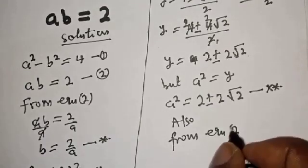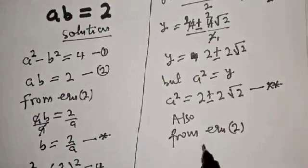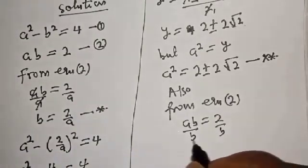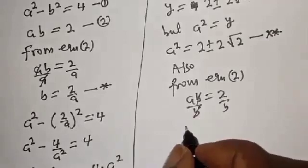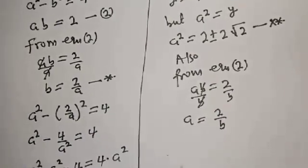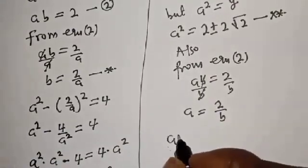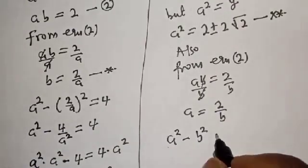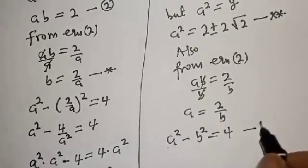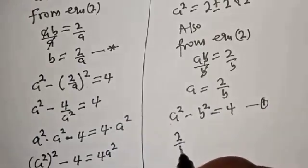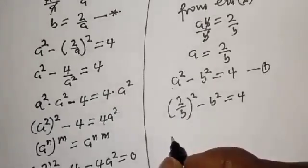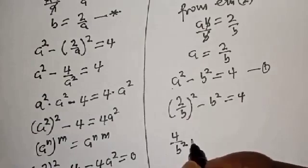Now from equation 2, let's make a the subject of the formula instead. ab equals 2; dividing both sides by b gives a equals 2 over b. Now substitute for a in equation 1: (2/b) squared minus b squared equals 4, which is 4 over b squared minus b squared equals 4.